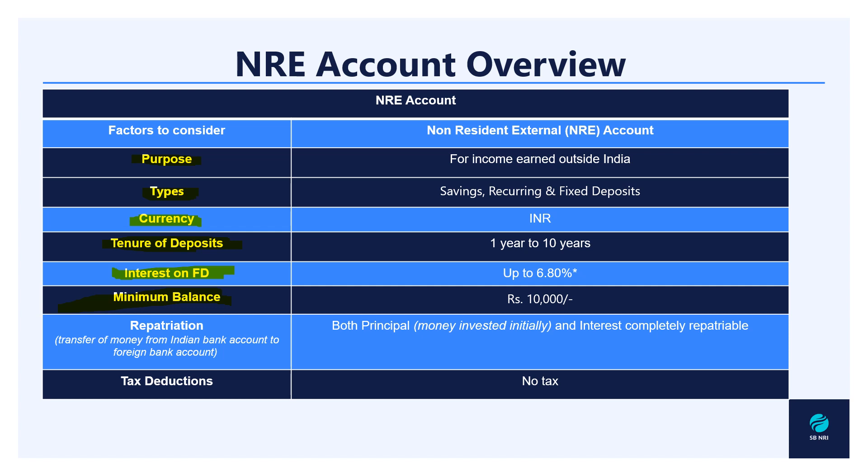Now we will discuss two main topics under the overview: repatriation and the associated tax benefit. Repatriation is the process of transferring the money in your NRE account to your overseas or foreign bank account. When you do that, the principal amount as well as the interest you have accumulated is completely and freely repatriable - meaning you can take all the money out and no taxes are deducted on the interest earned. Everything you have deposited and interest earned is free for you to take away.